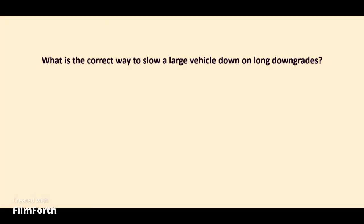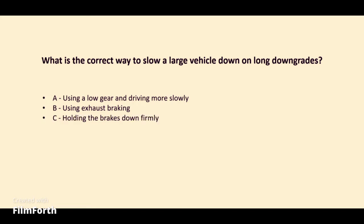What is the correct way to slow a large vehicle down on long downgrades? A. Using a low gear and driving more slowly. B. Using exhaust braking. C. Holding the brakes down firmly. D. Controlled braking. The answer: A. Using a low gear and driving more slowly.